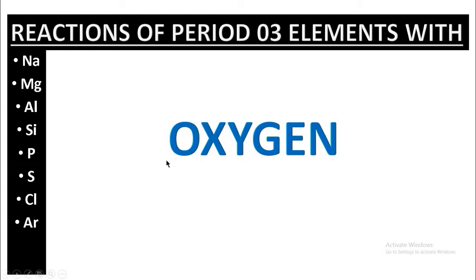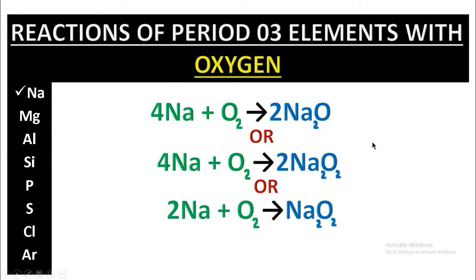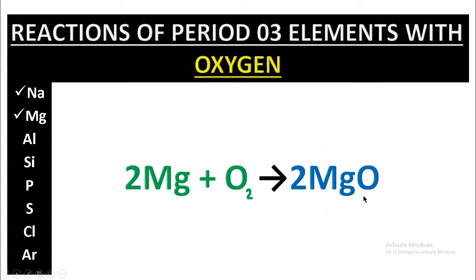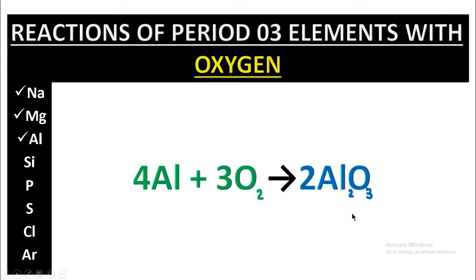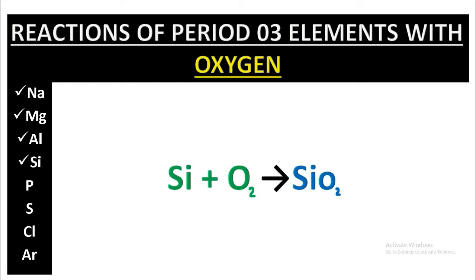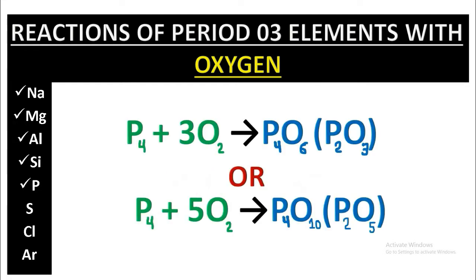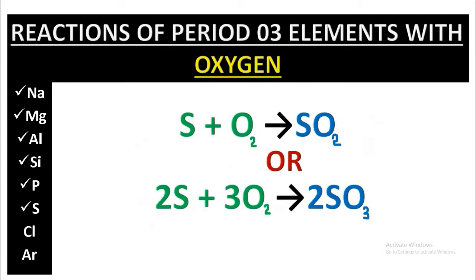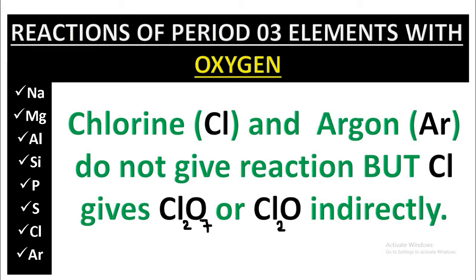Now let's go through the reactions of Period 3 elements with oxygen. First, sodium — it gives three reactions. Then magnesium, which reacts with oxygen to give MgO. Then aluminum, which also reacts with oxygen. Then silicon. This is phosphorus — it gives two reactions. Sulfur also gives two reactions.